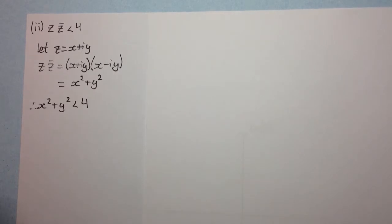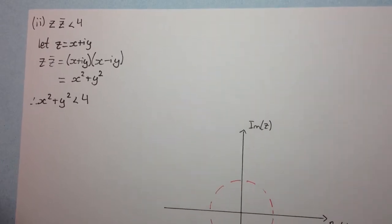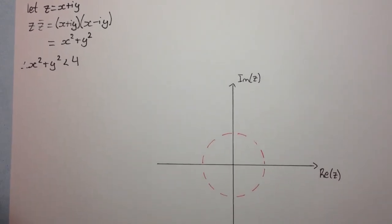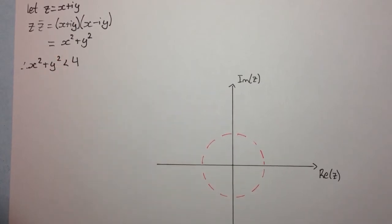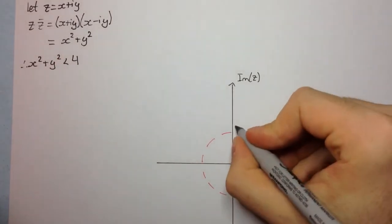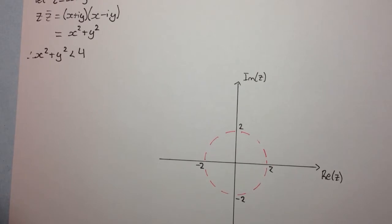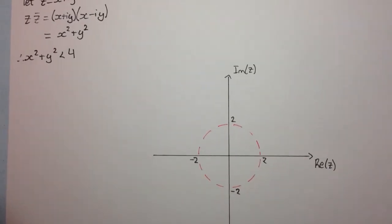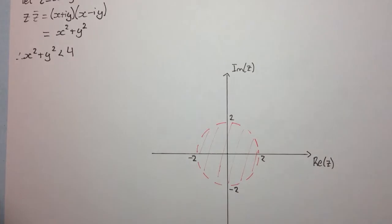So we're trying to sketch x² + y² < 4. This one is fairly simple — it's a circle. Again, we have a strictly less than sign so we don't include the boundary, but we want all the points inside the circle. The circle is centered at 0 with radius 2, so it's good to indicate that the intercepts are at 2, 2, −2, and −2. All the boundary points aren't included, but all the points within the circle are included.